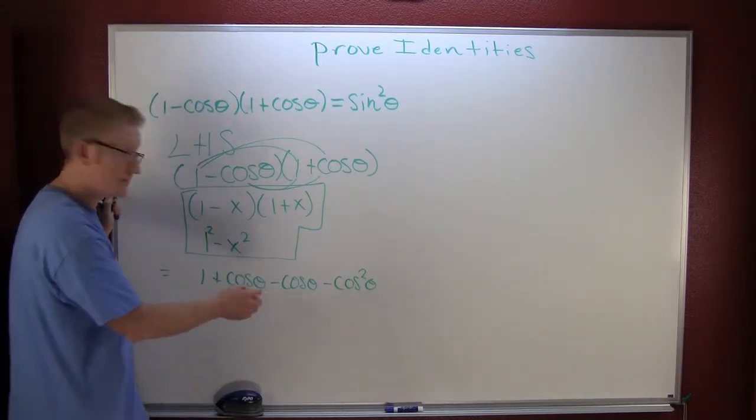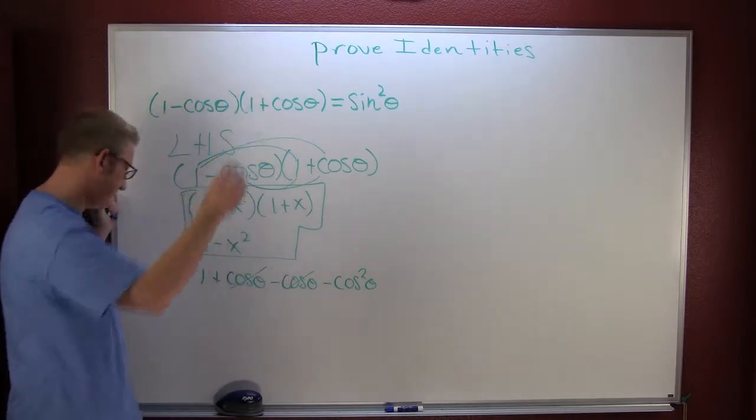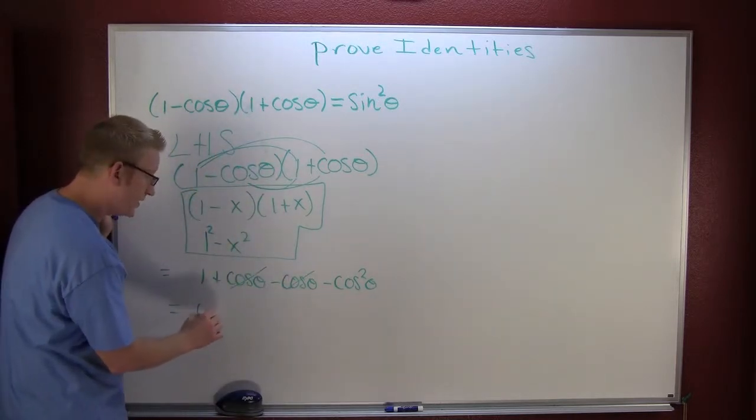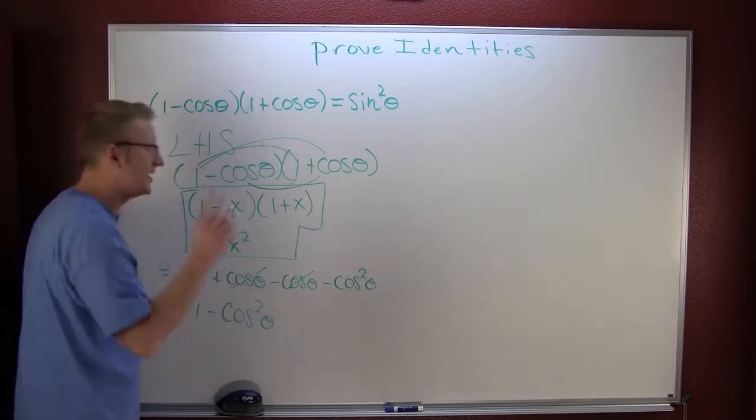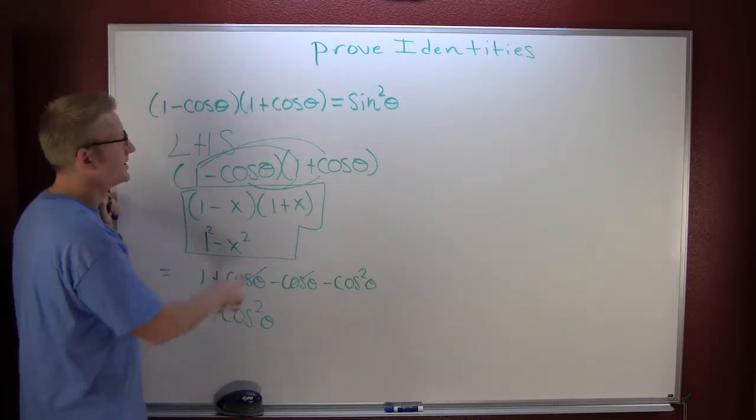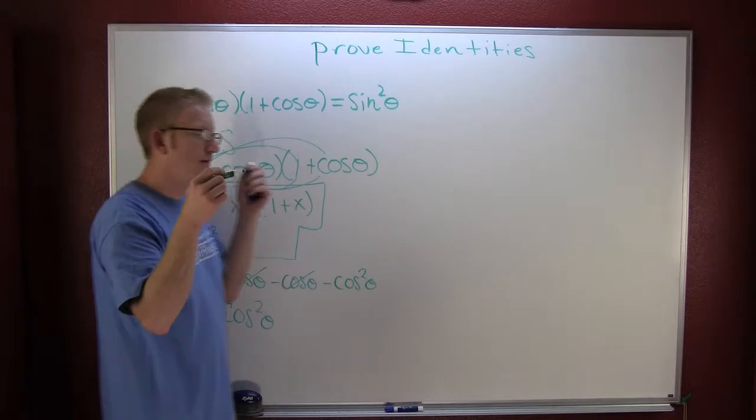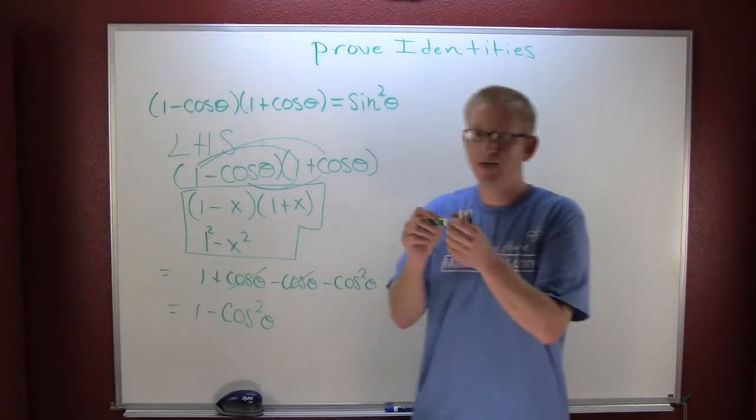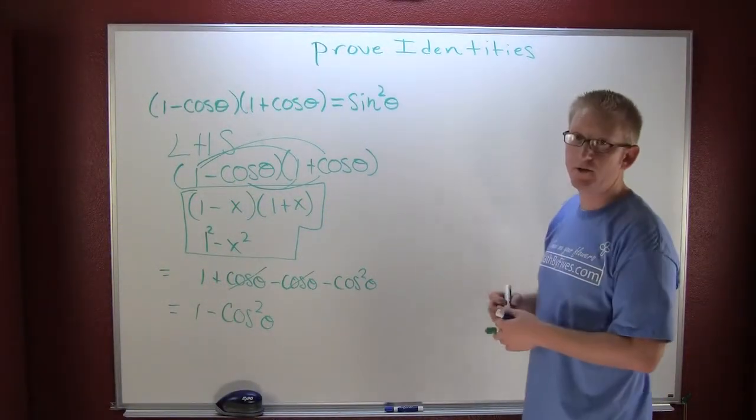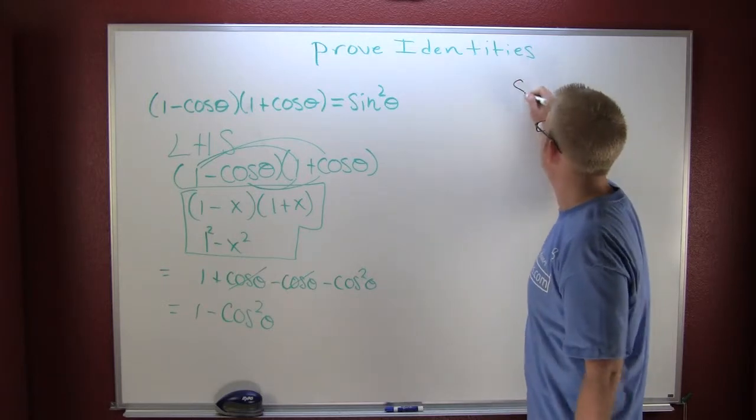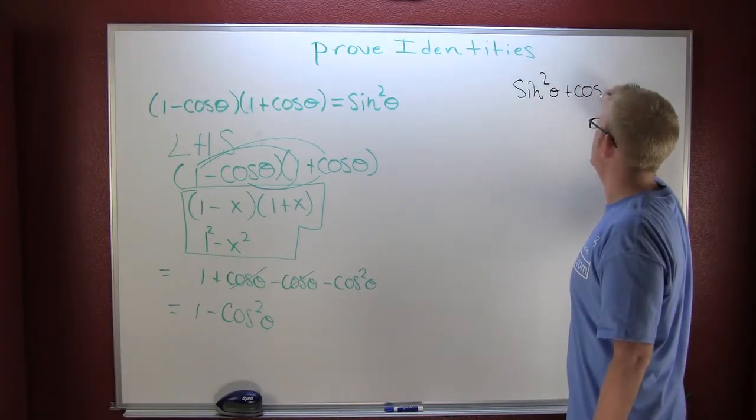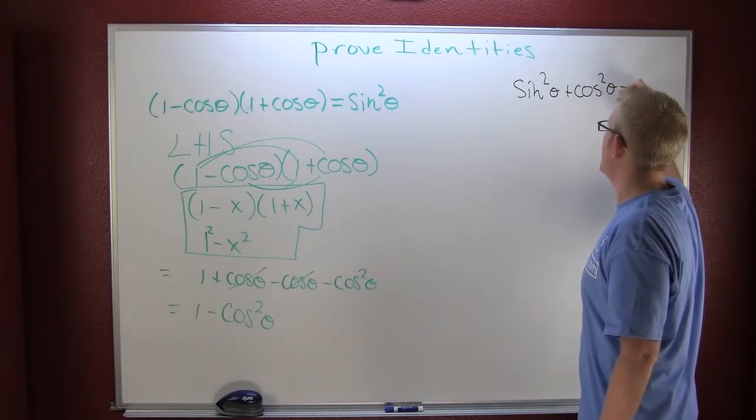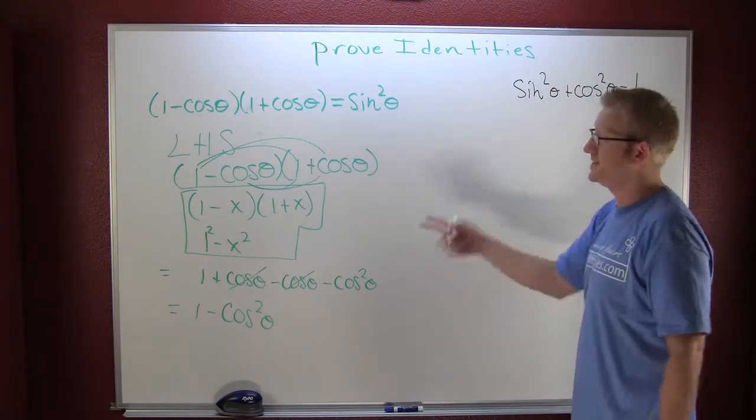So there you are, common terms. So then this is 1 minus cosine squared theta. But how am I gonna get this to there? Here's how: sometimes you get to use some of your other identities like this one: sine squared theta plus cosine squared theta, that happens to be one.